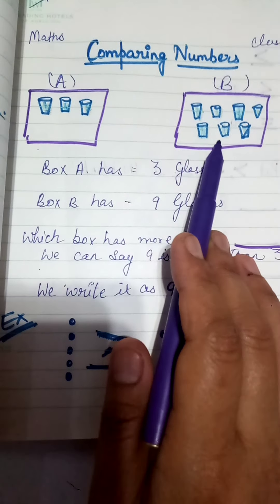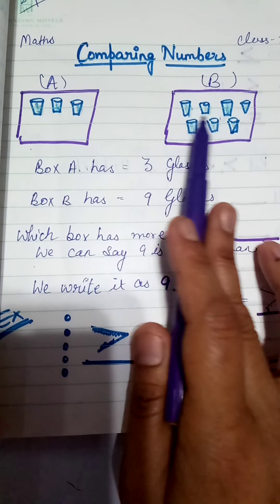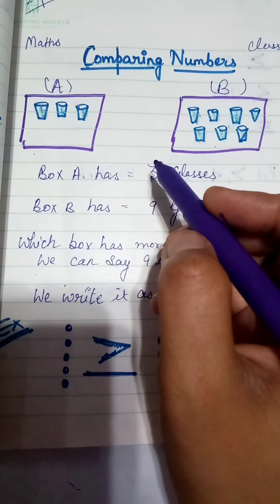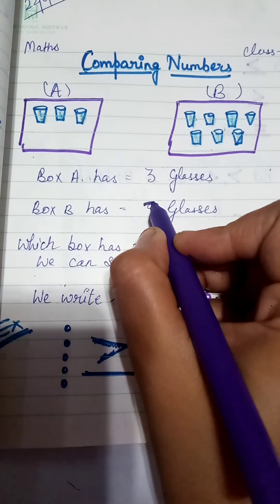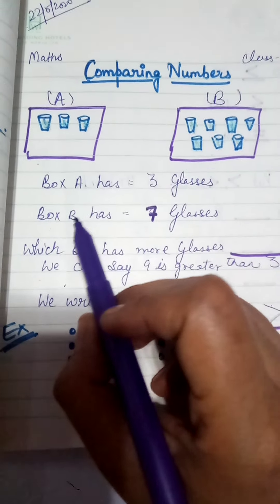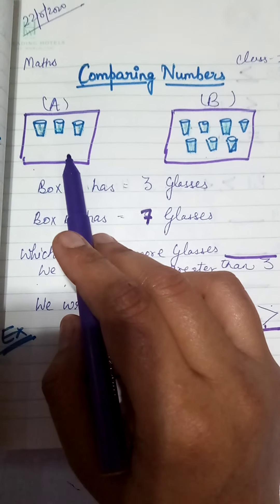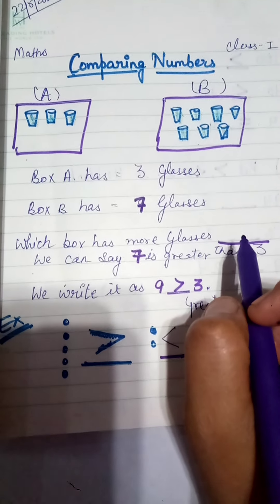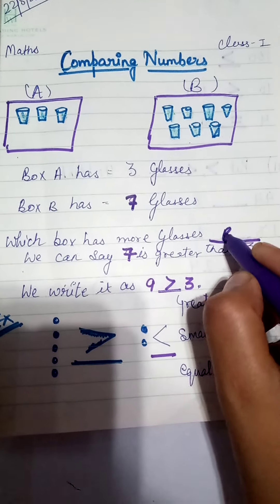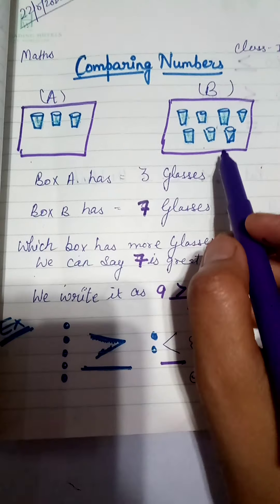This is group A and this is group B. Group A has one, two, three glasses, and group B has one, two, three, four, five, six, seven glasses. So box A has three glasses and box B has seven glasses. Which box has more glasses? Yes, B box. Right. So we can see that seven is greater than three, because seven is the greater number.